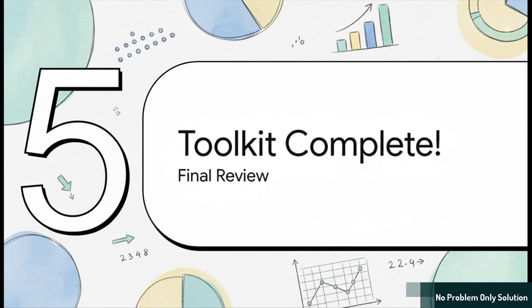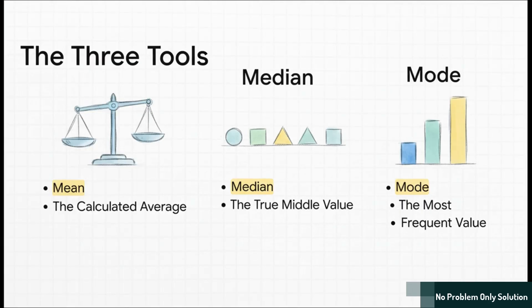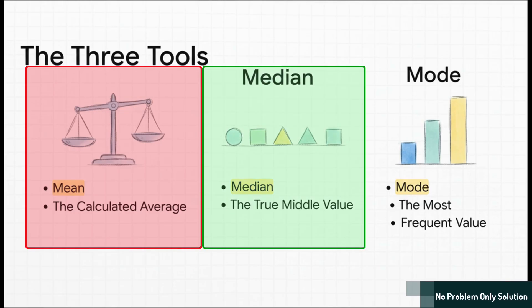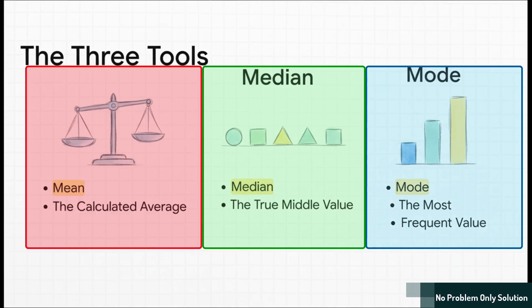And, just like that, your toolkit is complete. You now have three foundational tools to help you make sense of any data set. Let's do a super quick recap to lock it in. Okay, here it is. The whole thing in a nutshell. The mean? That's your calculated average. The median? That's your true middle value and it's tough as nails against outliers. And the mode? That's just the most popular kid in the class. The most frequent value. Each one tells you a slightly different story about the center of your data.